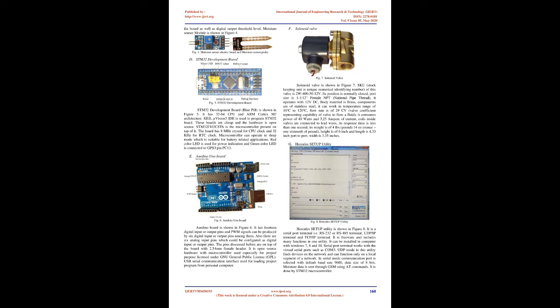Arduino Uno board, shown in Figure 6, has 14 digital input or output pins, and PWM signals can be produced by 6 of those pins. There are also 6 analog input pins which can be configured as digital input or output pins. The pins are on top of the board with 2.54mm female headers. It is open source hardware with a microcontroller licensed under the new General Public License (GPL). USB serial communication interface is used for loading programs from a personal computer.